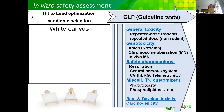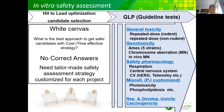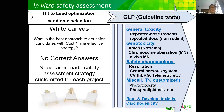The first hurdle is to address the IND. For that, we need to get a candidate that can pass the GLP guideline test. In contrast, during hit-to-lead optimization or candidate selection, the best approach is to get safer candidates with a cost- and time-effective strategy. On this point, we have no single correct answer. That means we need a tailor-made safety assessment strategy customized for each of your projects.